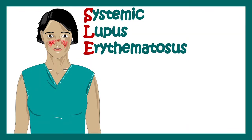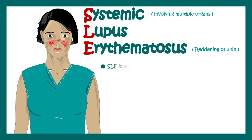In this video, we'll talk about systemic lupus erythematosus. Systemic means involving multiple organs, and erythematosus means reddening of the skin. So let's see what are the disease pathology, signs and symptoms, and the genetic and environmental causes.